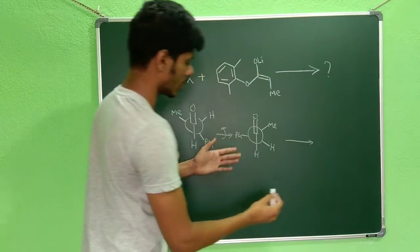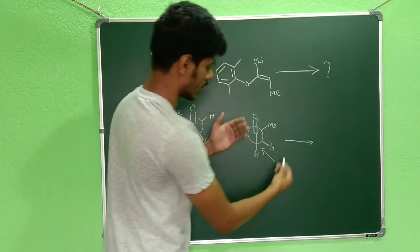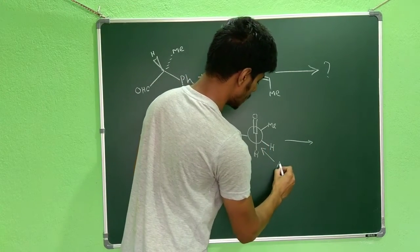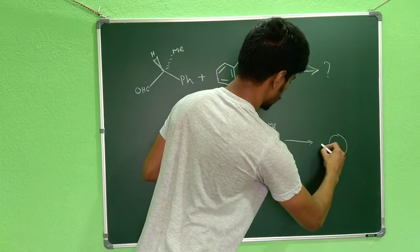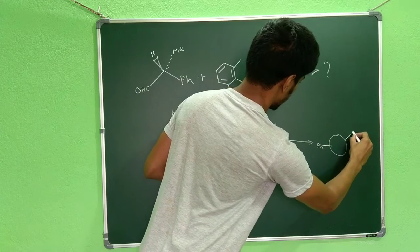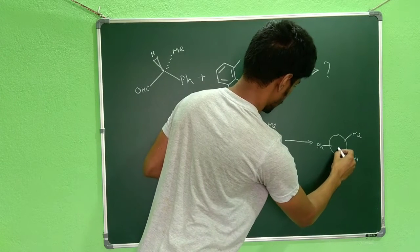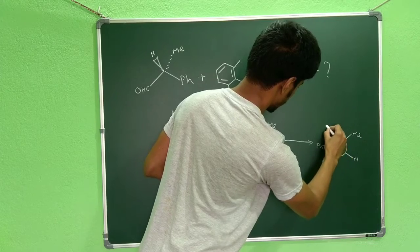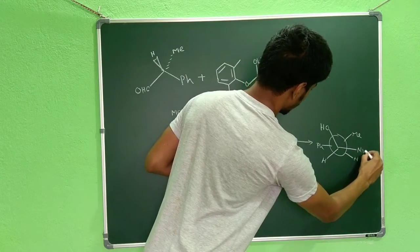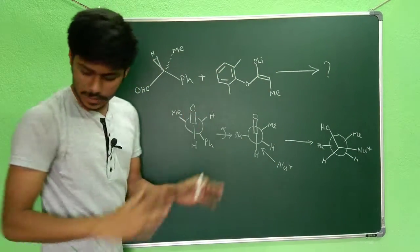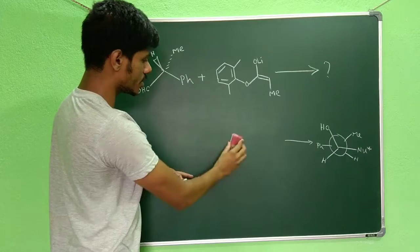In this conformation, the nucleophile will attack from this side. If we represent this nucleophile as Nu*, the product will have phenyl here, methyl here, hydrogen here, one hydrogen over here, oxygen here — giving OH — and Nu* here. Up to this point, it is the normal Felkin-Anh model used to predict stereochemistry.